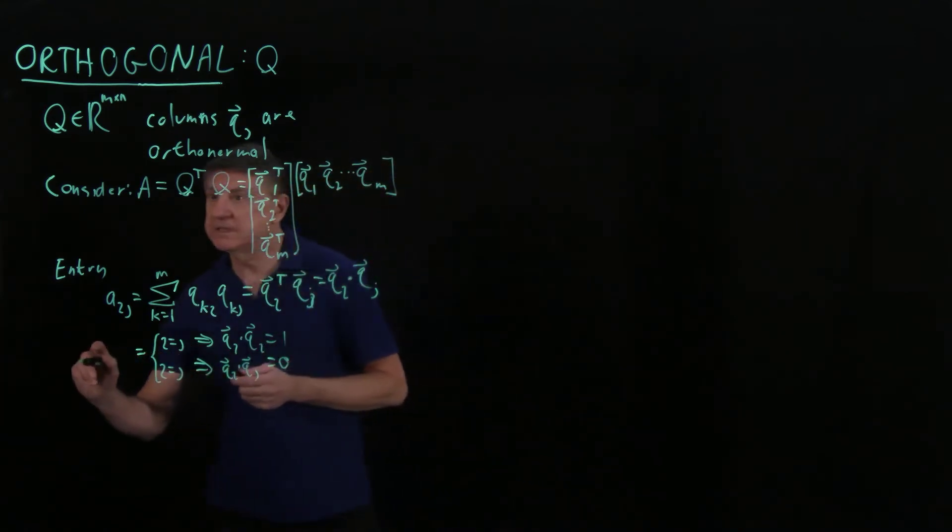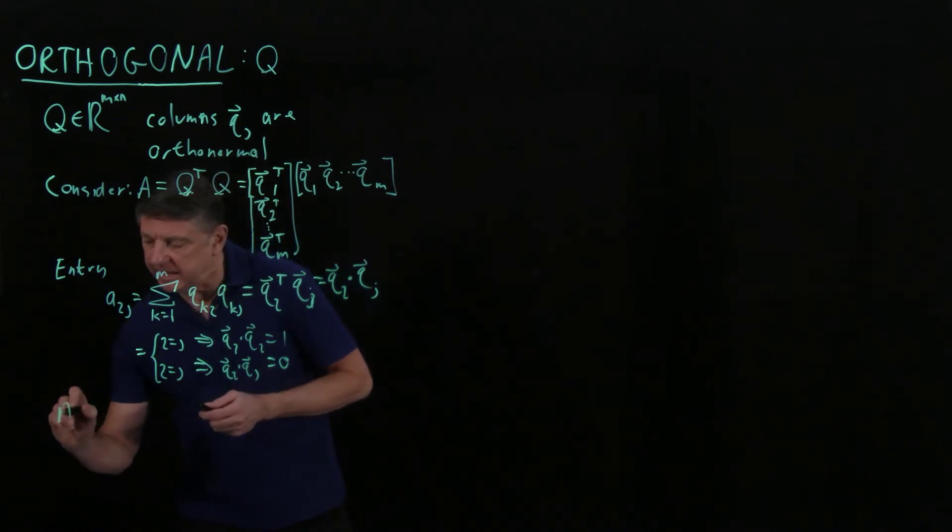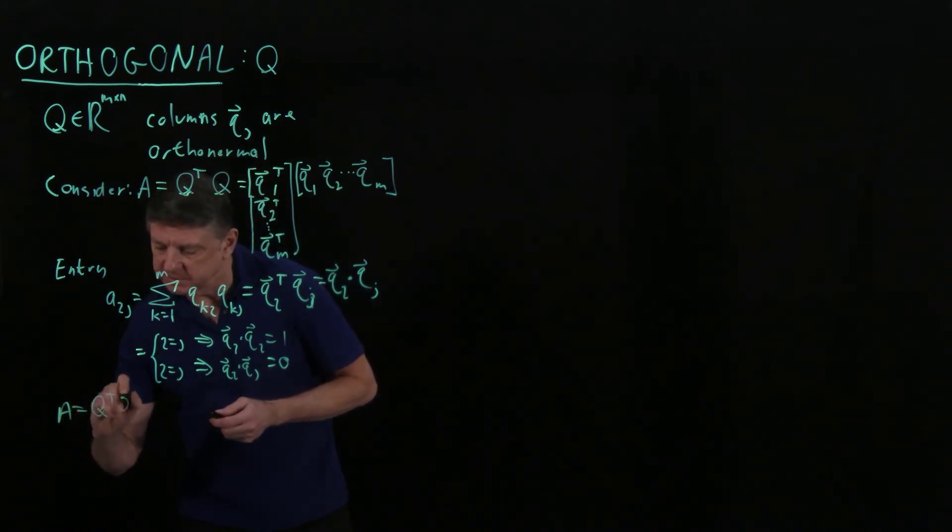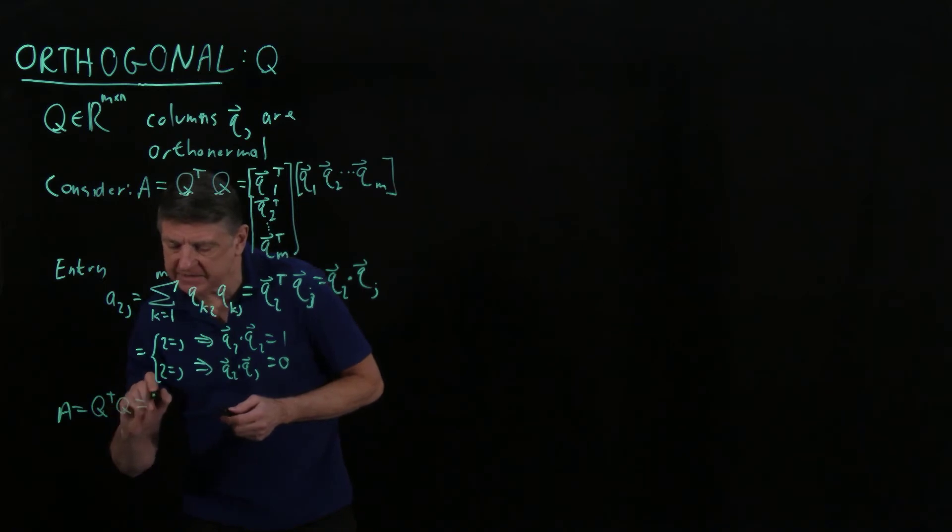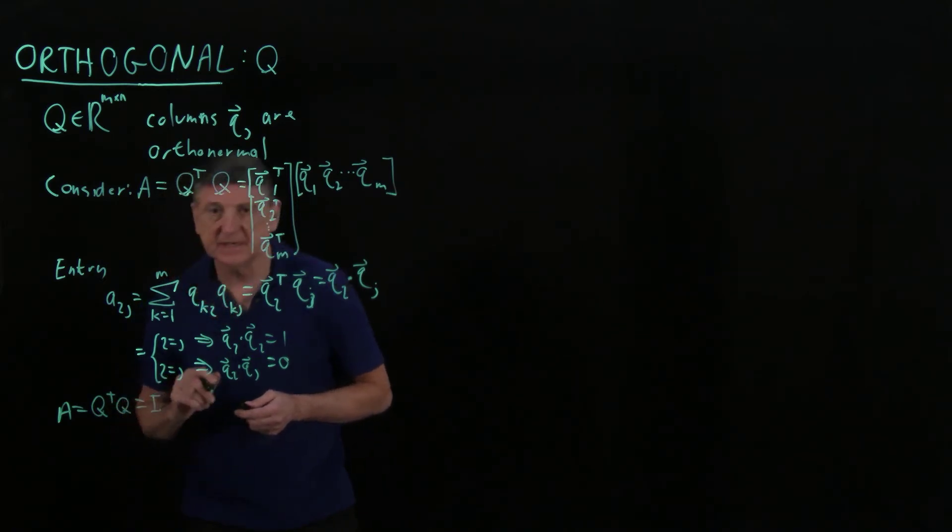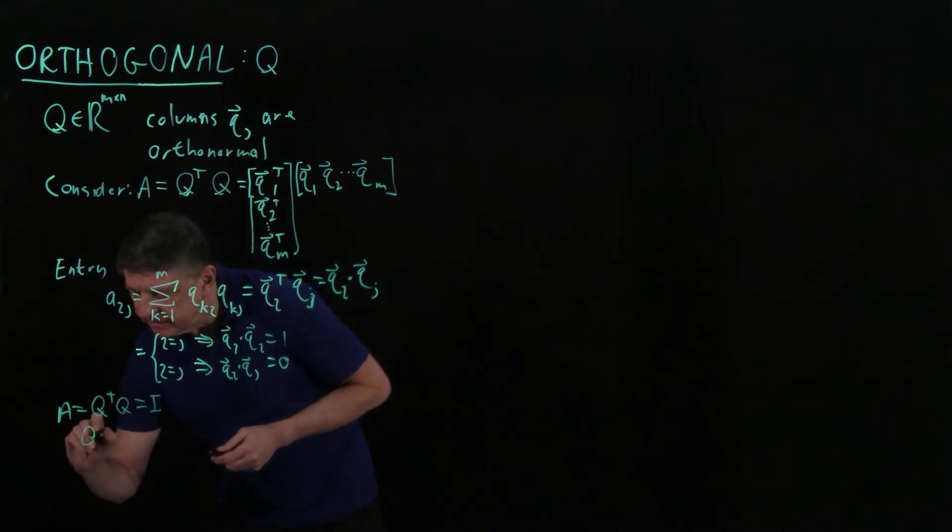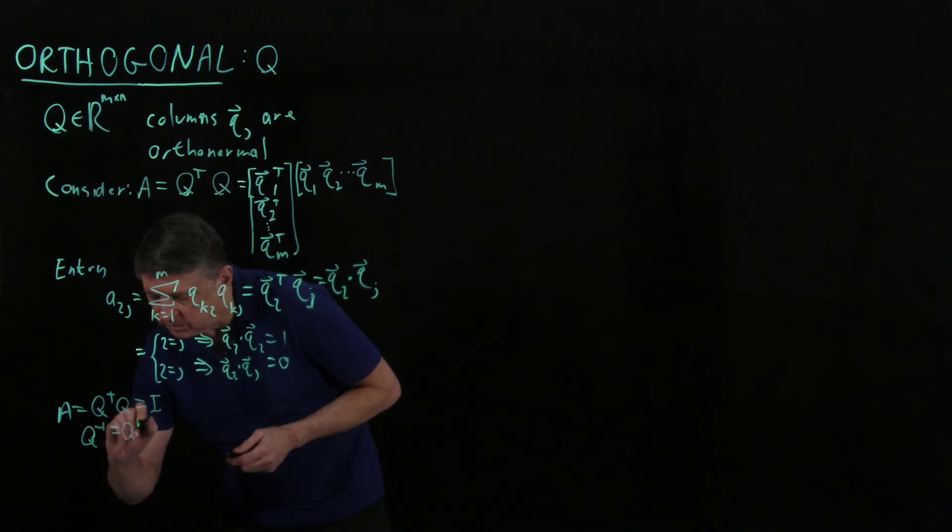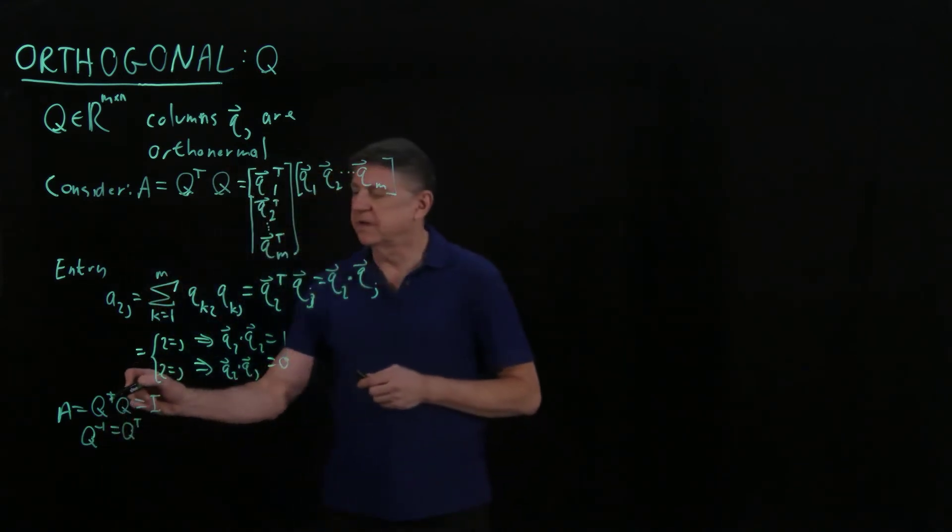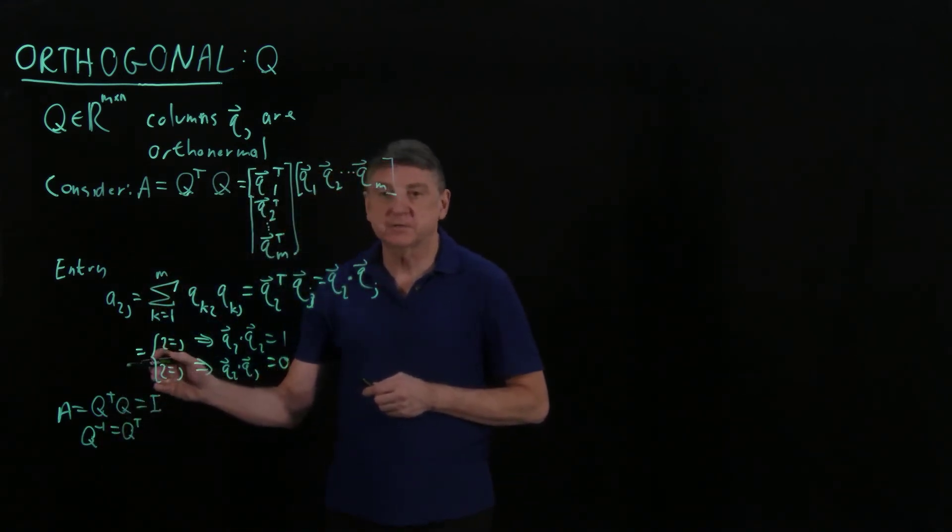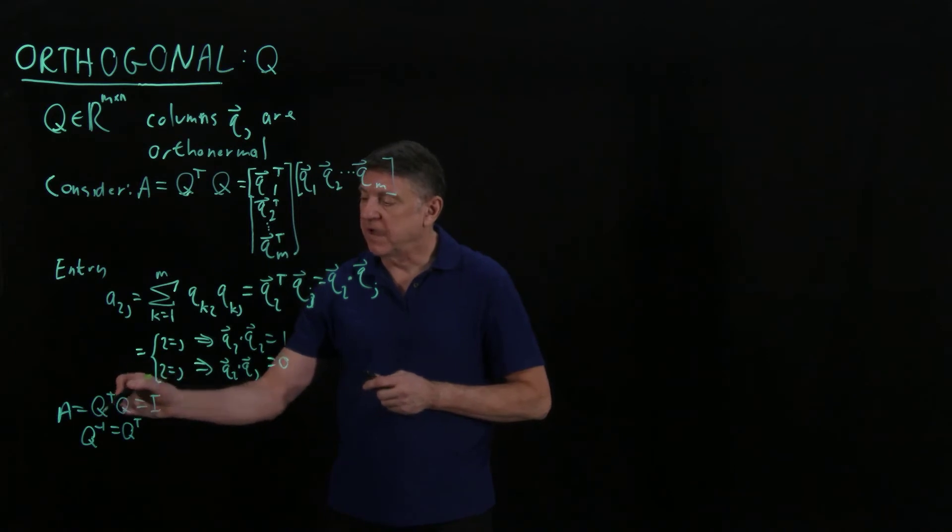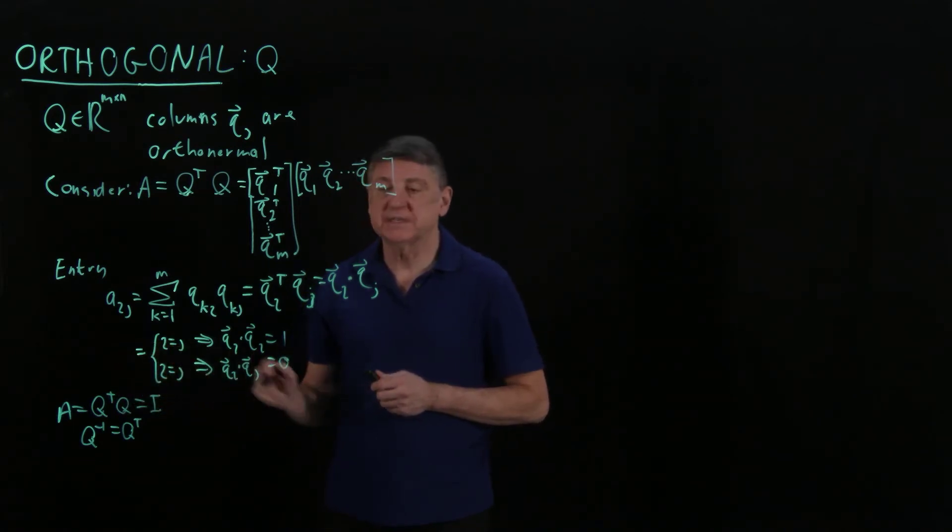So that means that A, which we wrote as Q transpose Q, has to equal the identity. And that implies that Q inverse is Q transpose, because only the inverse matrix for a general matrix has the property that the inverse times the matrix is the identity.